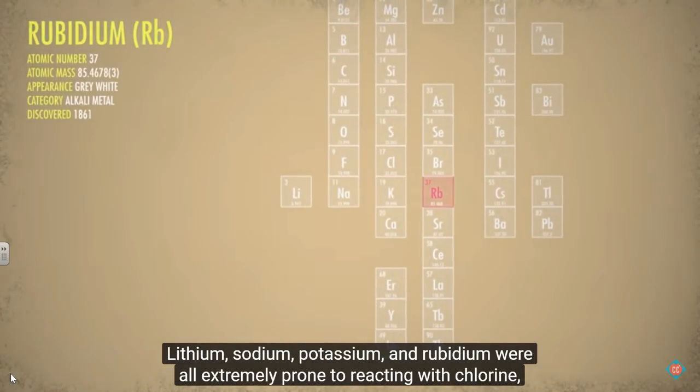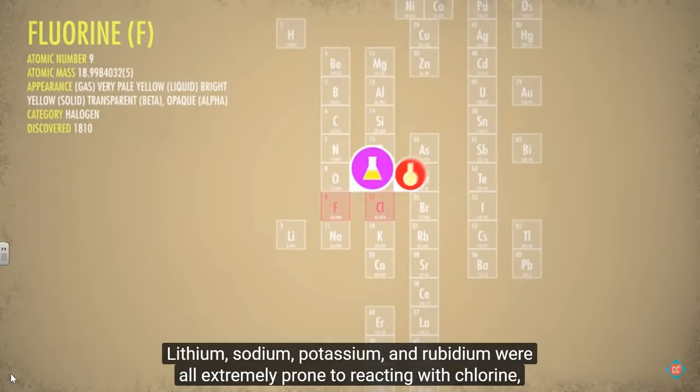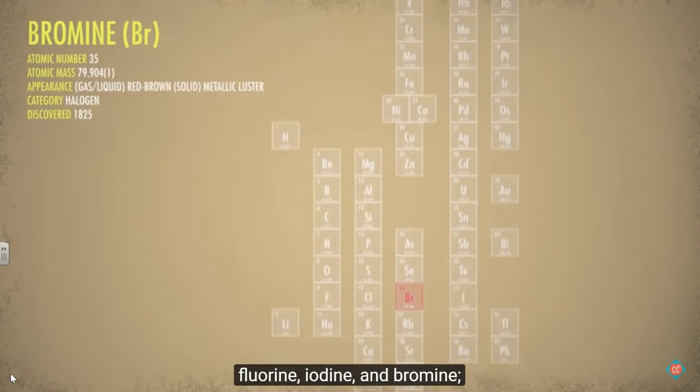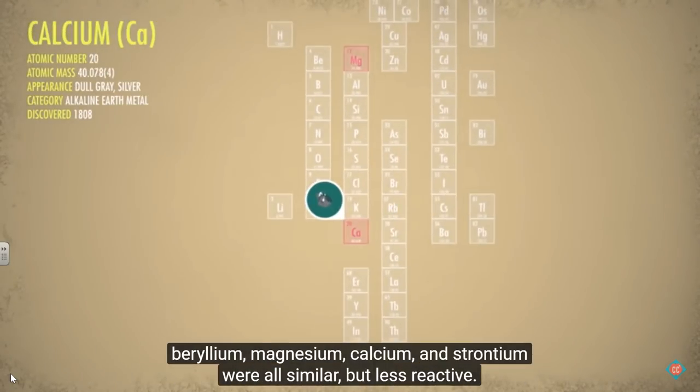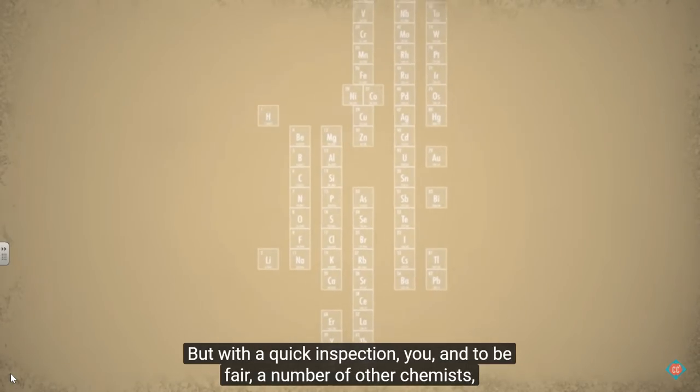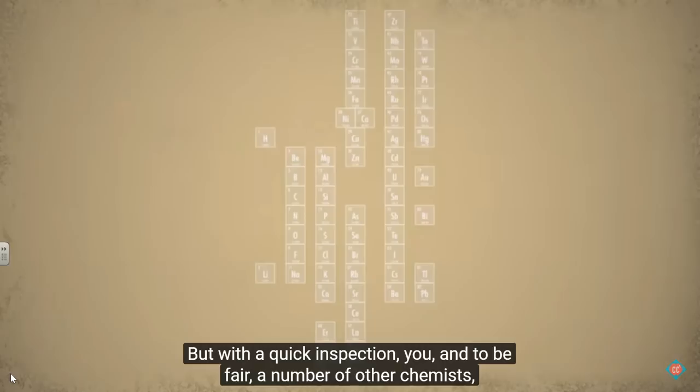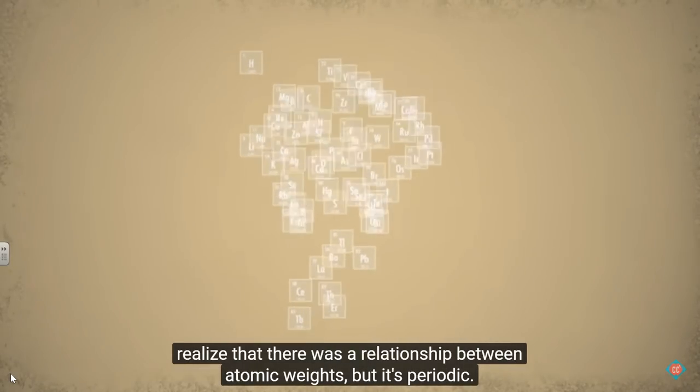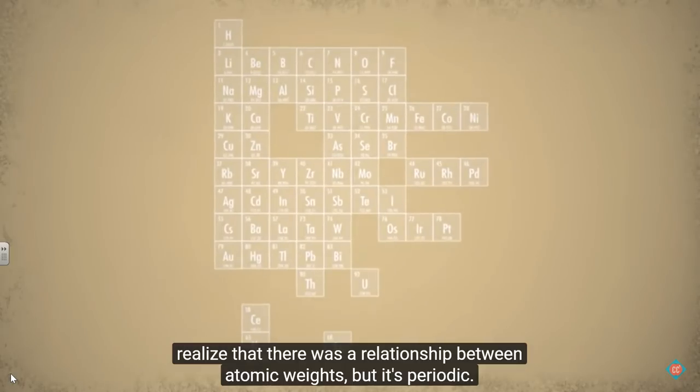Lithium, sodium, potassium, and rubidium were all extremely prone to reacting with chlorine, fluorine, iodine, and bromine. Beryllium, magnesium, calcium, and strontium were all similar but less reactive. But with a quick inspection, you and, to be fair, a number of other chemists realized that there was a relationship between atomic weights. But it's periodic.